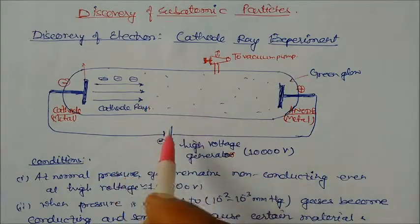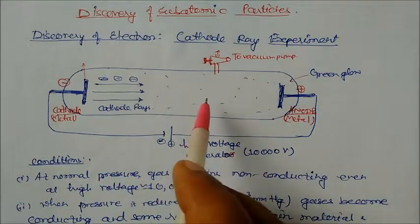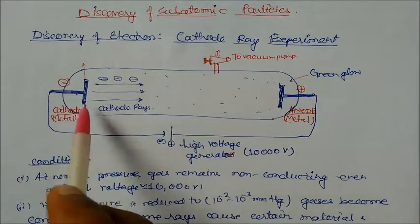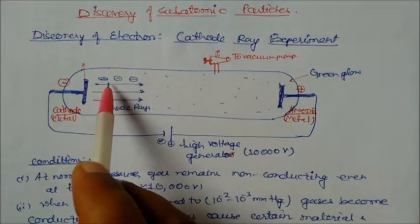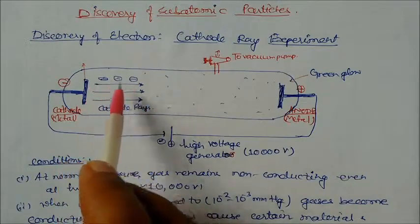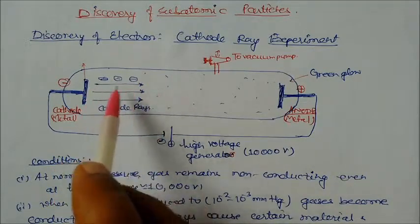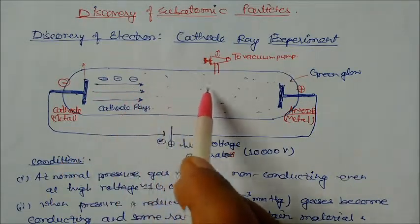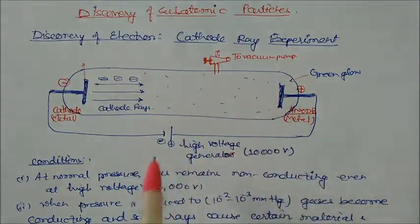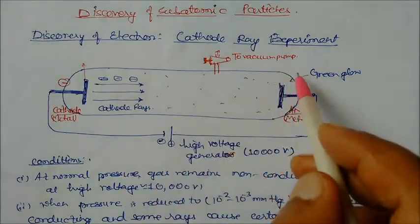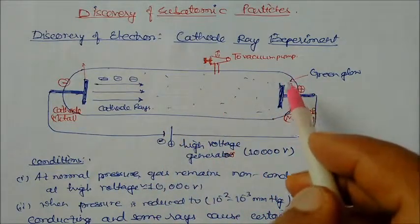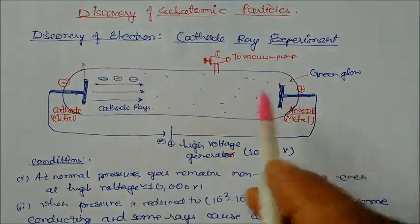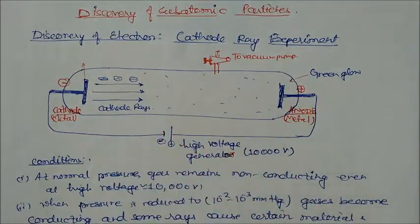With 10,000 volts and very low pressure, what happens is that from the cathode some particles and rays will come out and travel towards the anode. At the back side of the tube there will be a green glow. This was the phenomenon happening in the cathode ray experiment.